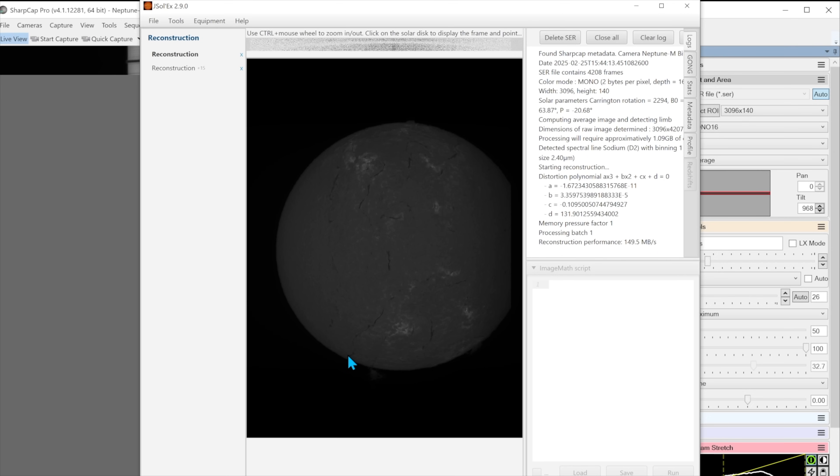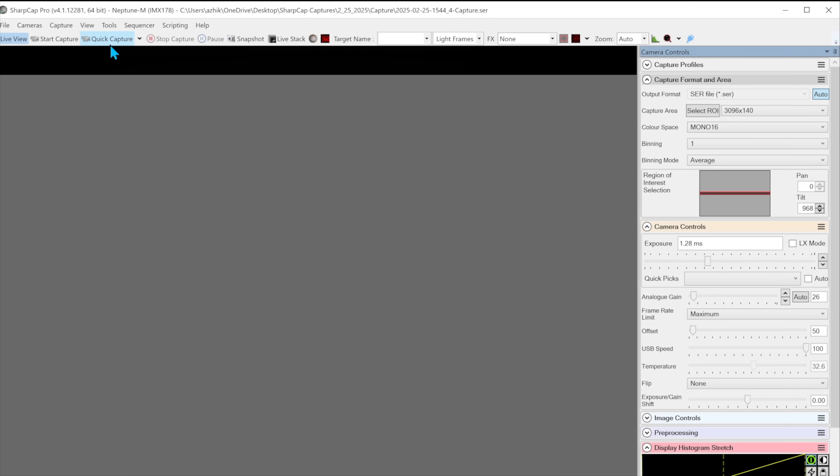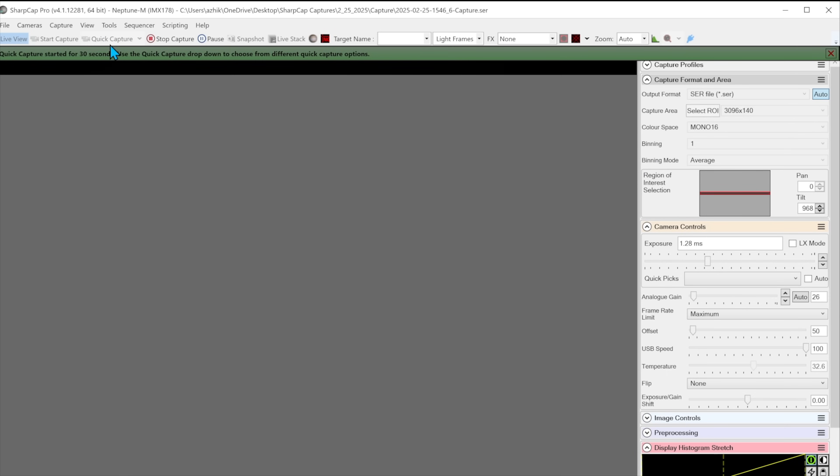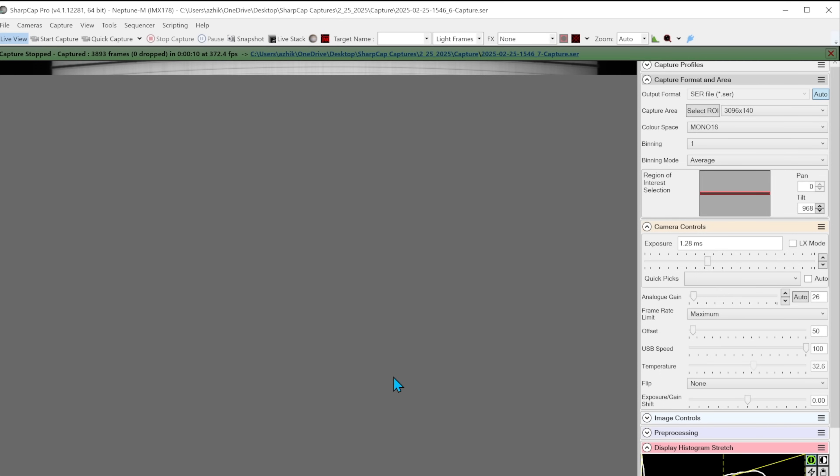Start each scan well before the limb in the dark and end well after the limb in the dark. Run JSOLEX in quick mode and manually inspect each disk image. Delete any bad ones and then in auto stacker select image and stack 100% of the remaining ones.